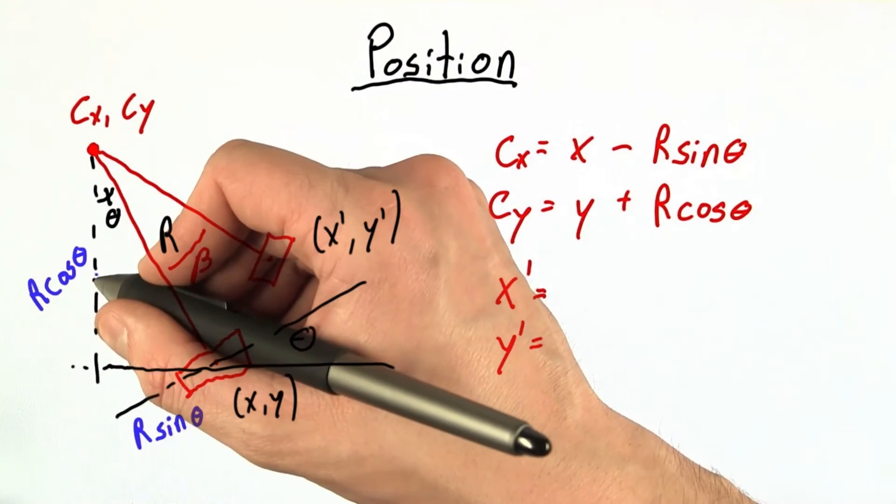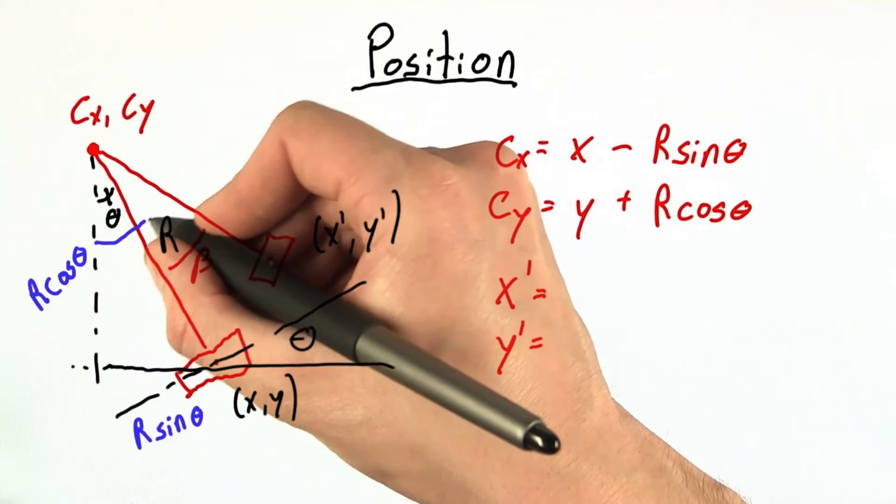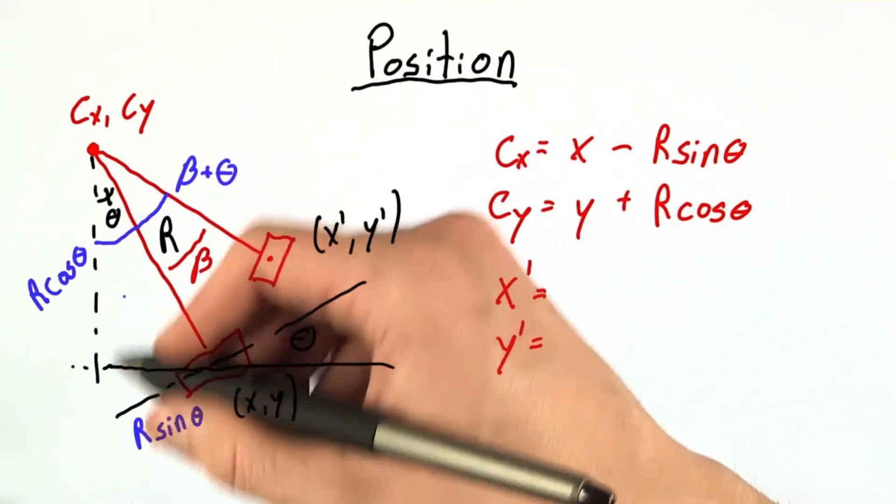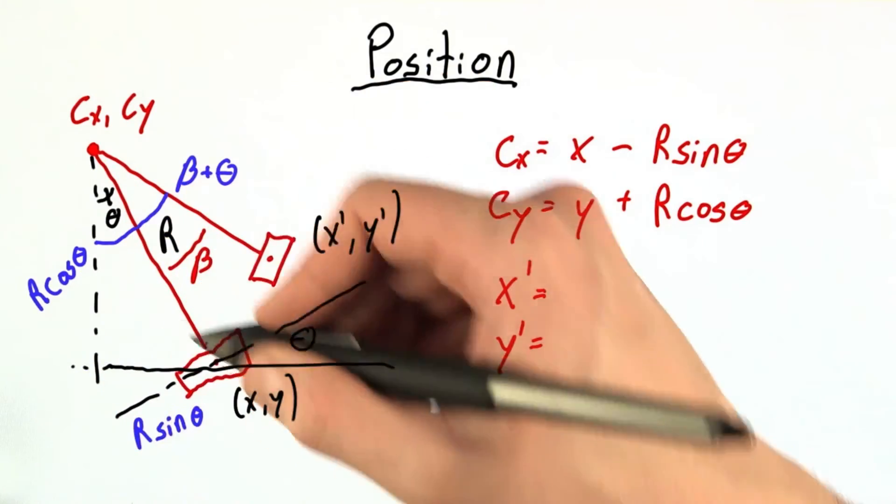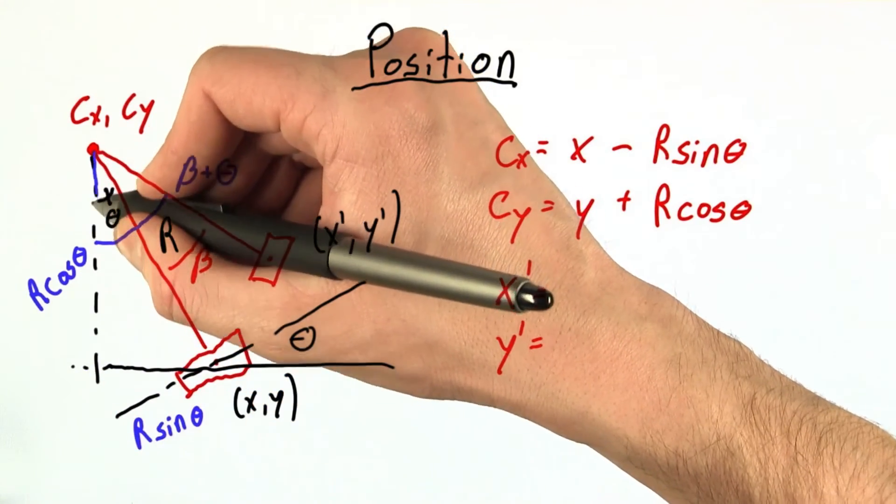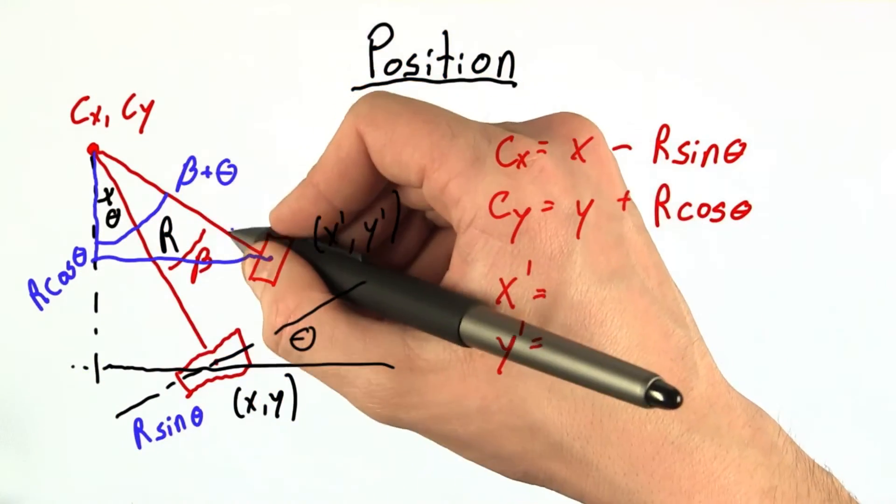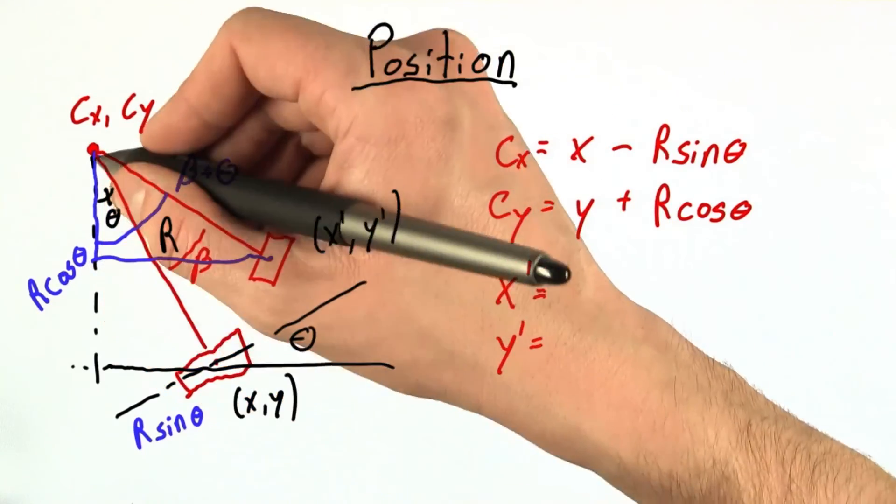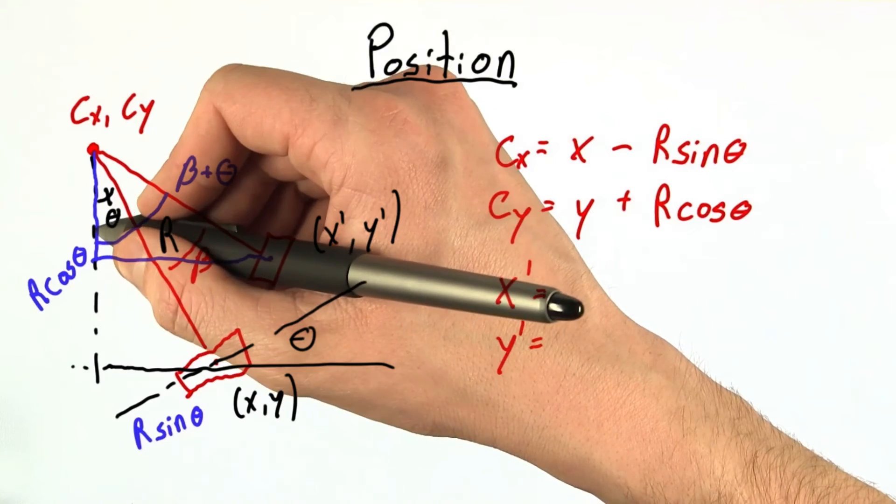Well, we can see that this total angle here is equal to beta plus theta. And just as we defined a right triangle before, we can define another right triangle where this line is going to be r times the sine of beta plus theta, and this line will be r times the cosine of beta plus theta.